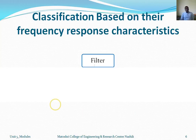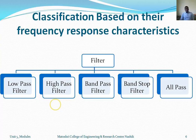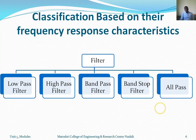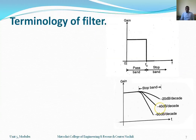Active filters are classified based on their frequency response characteristics. The five main classifications are: low pass filter, high pass filter, band pass filter, band stop filter, and all pass filter. In order to study all these filters, we first need to understand the various terminology and then study the frequency responses of each filter type.